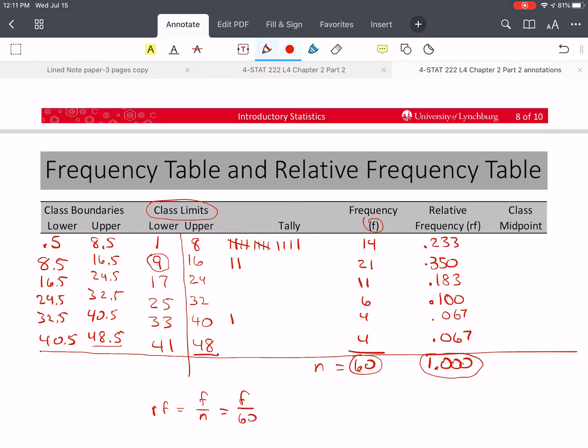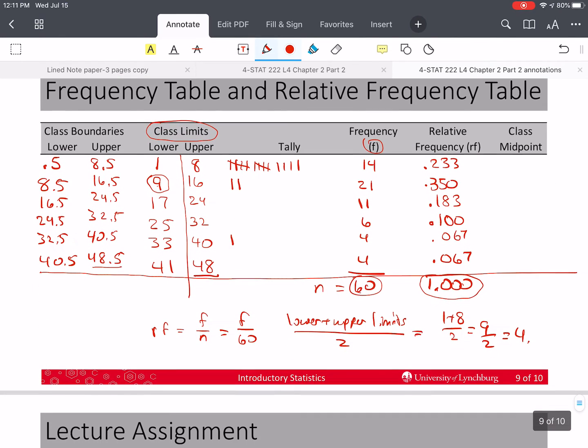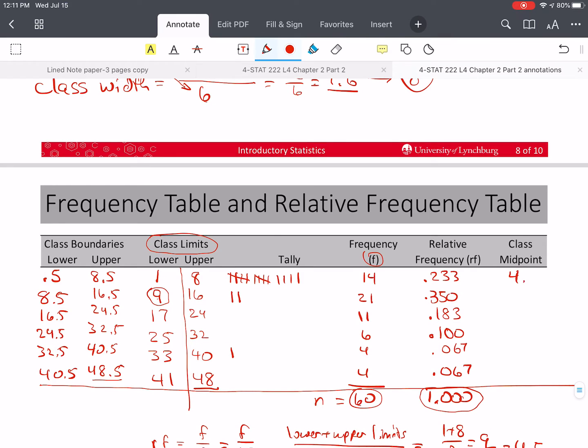So the only thing that's left to do is our class midpoint. And the book says that we need to take the lower plus the upper limits, class limits, and divide by two. We're taking the average of those. So we'll do the same thing. One plus eight divided by two. Nine divided by two equals 4.5. So this first one is 4.5. And the easiest thing I think to do is then add the class width to this number, rather than calculate the average for each one of them. So eight and four is 12.5, 20.5, 28.5, 36.5, and 44.5. By adding eight, adding our class width to each of these numbers. So we have now completed making our frequency table and relative frequency table.